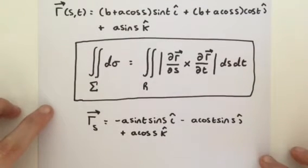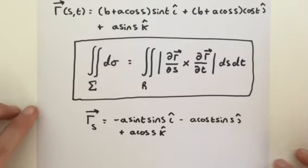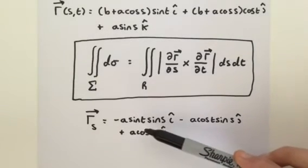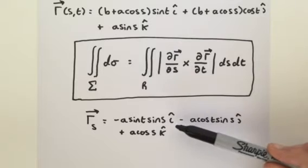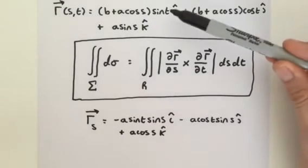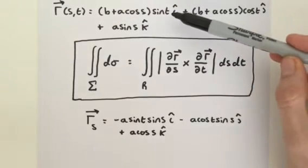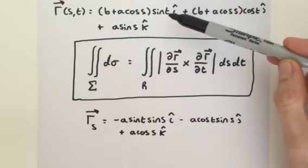We have the partial derivative with respect to s. We get minus a sine t sine s times i for the x component. This is because if you expand, we get sine t times b. If you differentiate with respect to s, that goes to 0 because that's a constant.